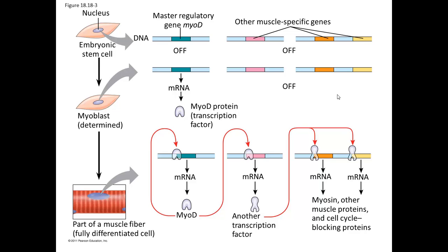Gene expression is also very important in cellular differentiation, which is when different cells are induced to have very specific functions. An embryonic stem cell is a pluripotent cell — it has the potential to become all kinds of cells. However, in the development of muscle, that embryonic stem cell has to give rise to a myoblast, and that myoblast has to give rise to a cell that becomes part of a muscle fiber. This is a fully differentiated cell because it has reached its final specific function. All of these cells have exactly the same DNA, so we have to express different genes from the same DNA to go from a pluripotent embryonic stem cell to this differentiated muscle fiber cell.